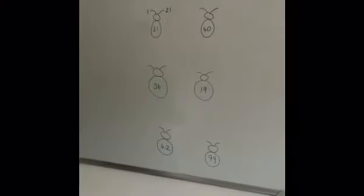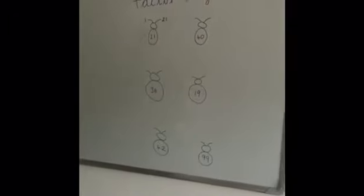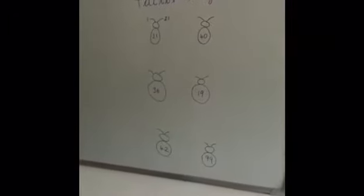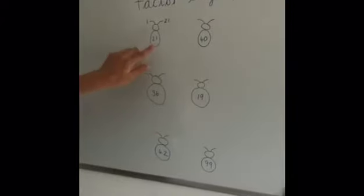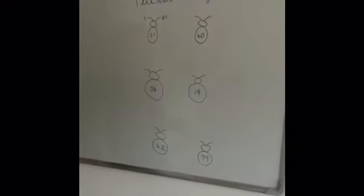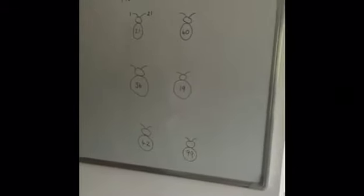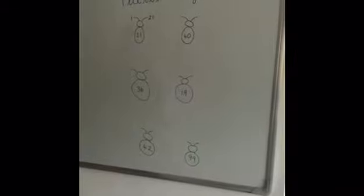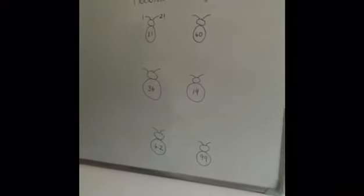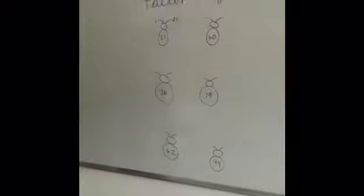And then we start working through systematically. So I've had number 1, now I'm going to try number 2. So let's see if I can count in 2s and reach 21. 2, 4, 6, 8, 10, 12, 14, 16, 18, 20, 22. So 2 is not a factor of 21 because it doesn't fit in equally.